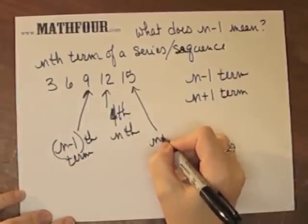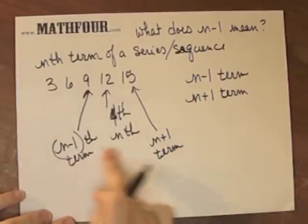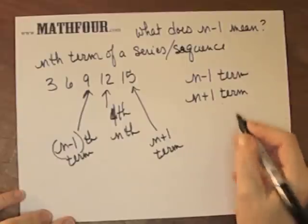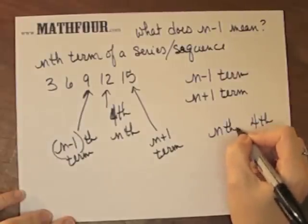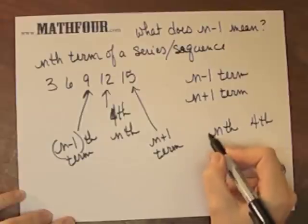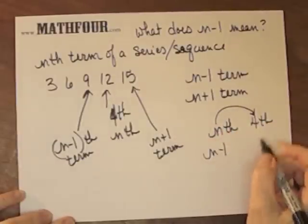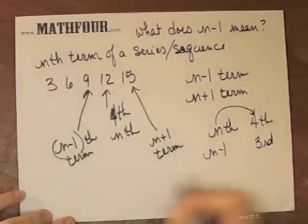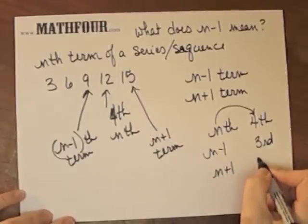So this is the n plus 1 term. So it's just the n minus 1 term, so if n is 4, then the n minus 1 term is the third term, and the n plus 1 term is the fifth term.